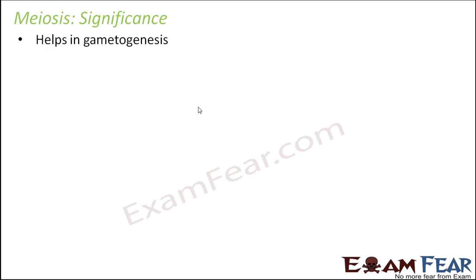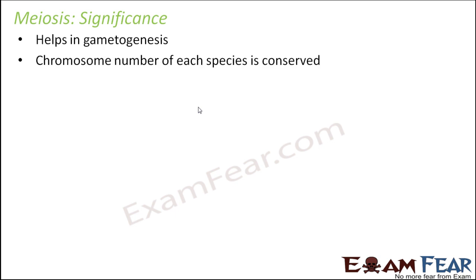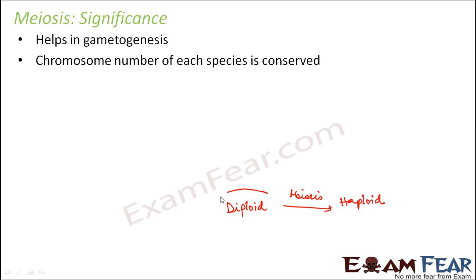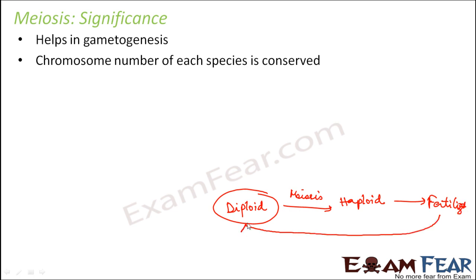Now let us look at the significance and importance of meiosis. It helps in gametogenesis, which is extremely important for sexual reproduction. If gametes are not formed, organisms which reproduce sexually would not be able to reproduce at all. Also, the chromosome number of each species is conserved: the diploid cell undergoes meiosis to produce haploid cells, which then undergo fertilization to form a diploid cell again — so the diploid nature is conserved.